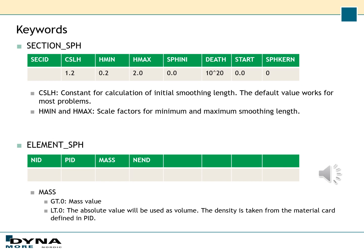For the section SPH keyword, you can often use the default settings that work in most applications. The CSLH option gives a constant for calculation of initial smoothing length — you typically don't need to change that. You also have the possibility to set H-mean and H-max, which give scale factors for the minimum and maximum smoothing length. In the element SPH keyword, you may set the mass, where a mass greater than 0 gives the mass of the element. If you set a negative value, the absolute value will be used as the volume of the particle, and the density will then be taken from the material card defined in the PID.